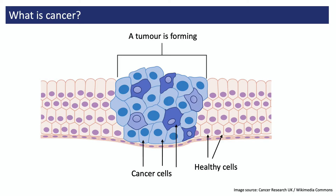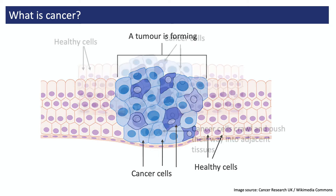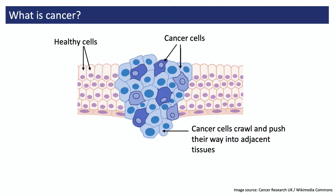On this diagram, you can see the healthy cells are very orderly, living side by side. But the cancer cells are all squished together and pushing out at the cells around them. One of the most dangerous things a cancer can do is to invade nearby tissues and organs, which might prevent them from working properly.